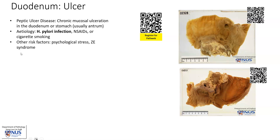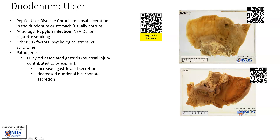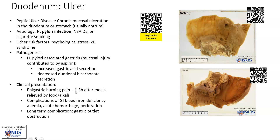Zollinger-Ellison syndrome, where there are gastrinomas that again result in increased acid secretion, is another risk factor. There is usually a background of H. pylori-associated gastritis, and the mucosal injury that is caused can be compounded and contributed to by drugs such as aspirin. The resulting effect is increased gastric acid secretion as well as decreased protective duodenal bicarbonate secretion.